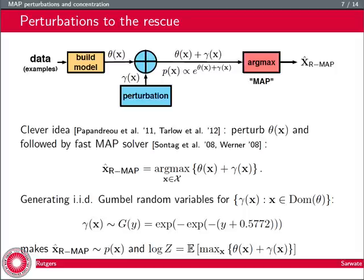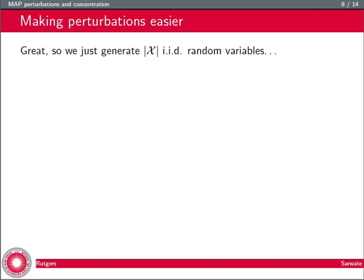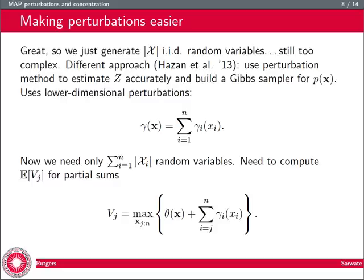If you choose for gamma of x a Gumbel distribution—generating iid Gumbel random variables for each configuration x—then the distribution of x hat r map is actually p of x, and the log partition function is the expectation of the maximum value. This seems great, but script X size is the product of all the xi's alphabets, so there's an exponential number of random variables, making this too computationally complicated.